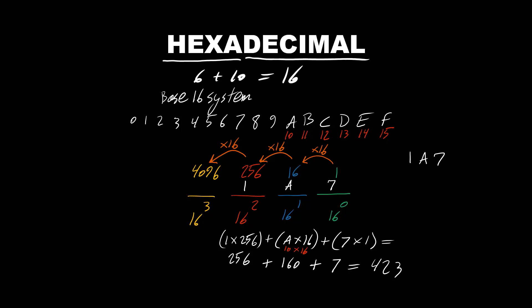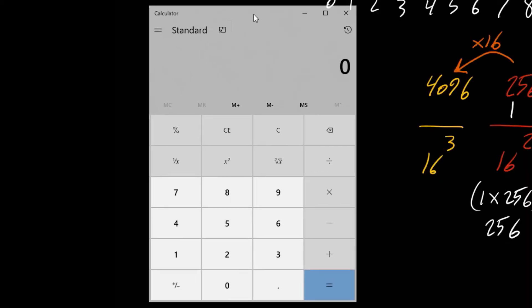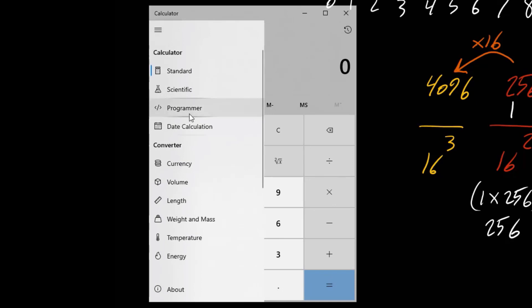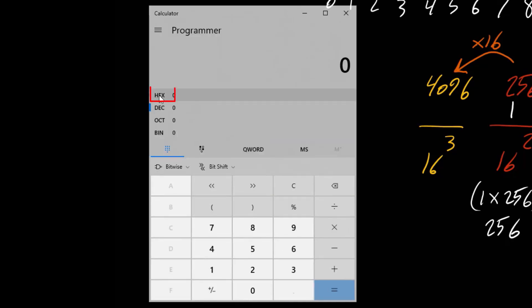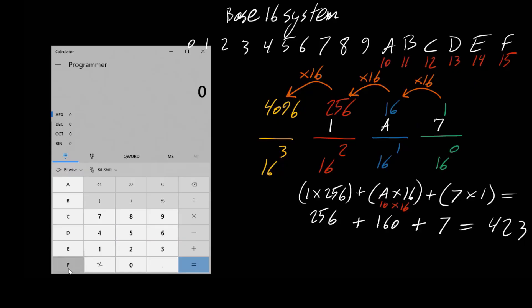Let's see it in calculator. We want to make sure the view is programmer view and hex is selected. You can see we have ABCDEF available as well. Let's put 1A7, and here we can see the decimal value of 423.